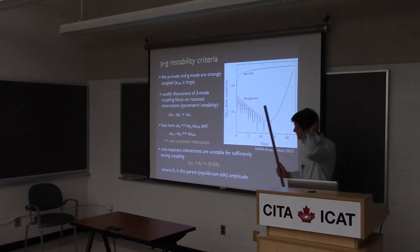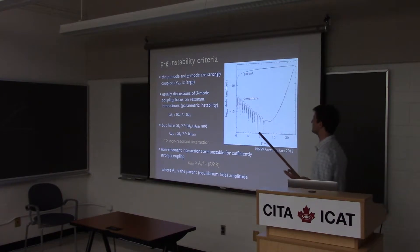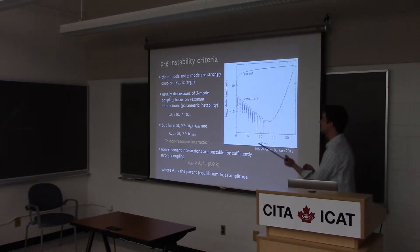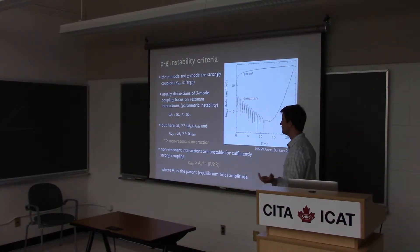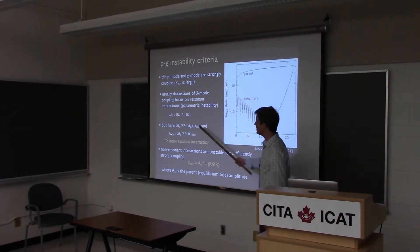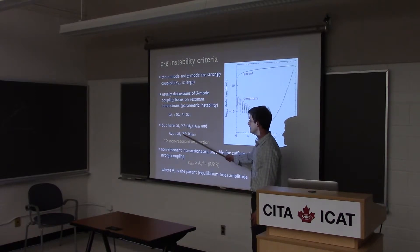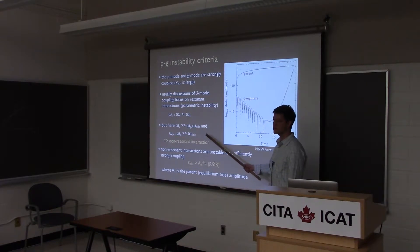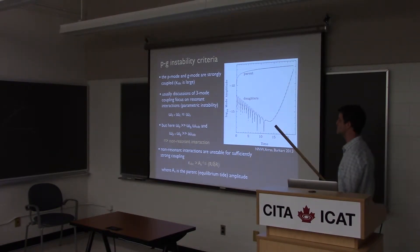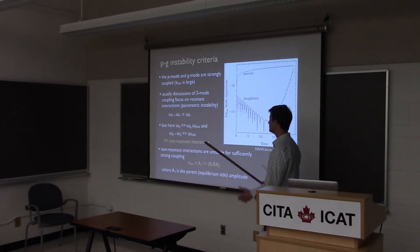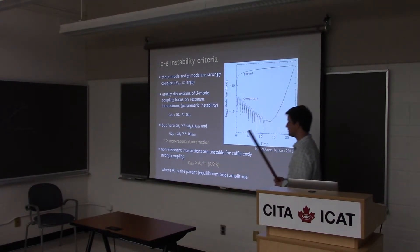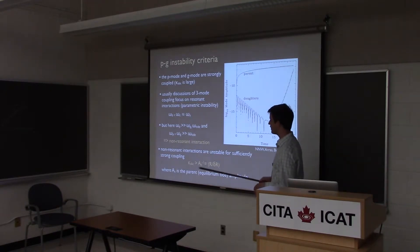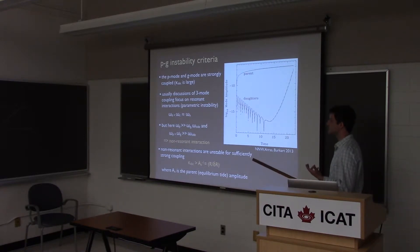Having established the coupling can be large, we evaluate the instability criteria. Unlike parametric instability (where daughter frequencies sum to the parent frequency), here P-modes have much higher frequency than G-modes or the tidal frequency — so this is a non-resonant interaction. Nevertheless, non-resonant daughter pairs are unstable if the coupling coefficient κ exceeds 1/(delta r / r). At gravitational wave frequencies above about 25 Hz — roughly when a system first enters LIGO's bandpass — the equilibrium tide becomes unstable.